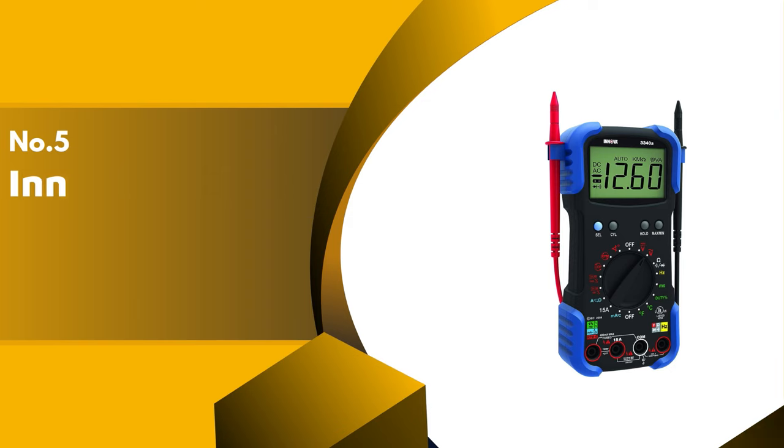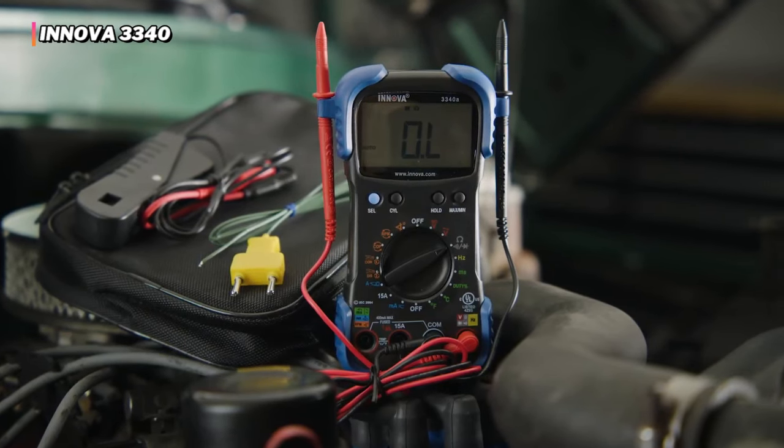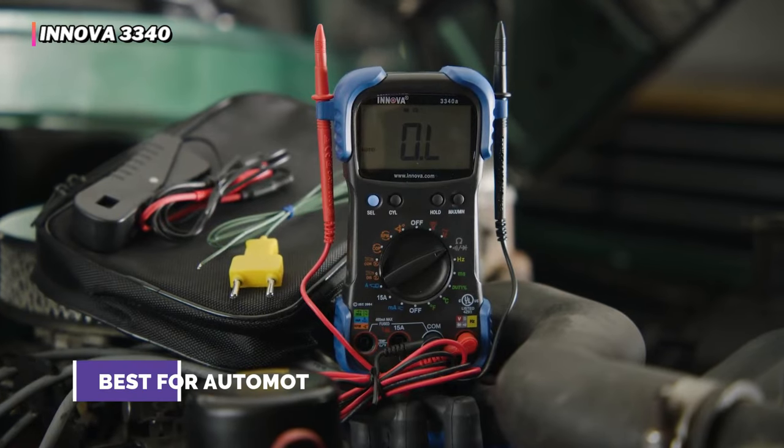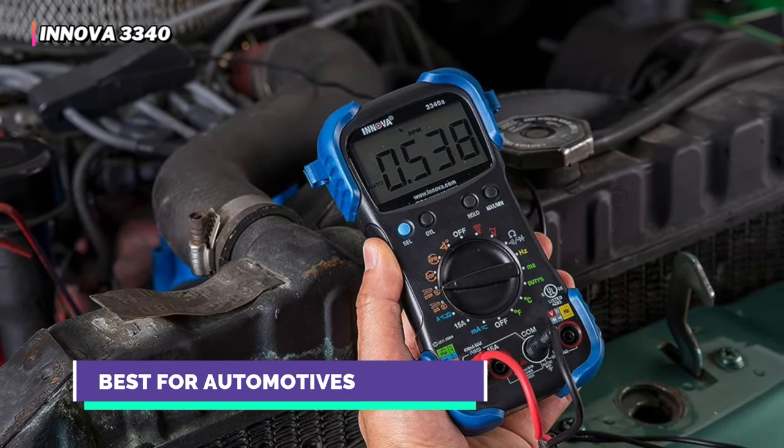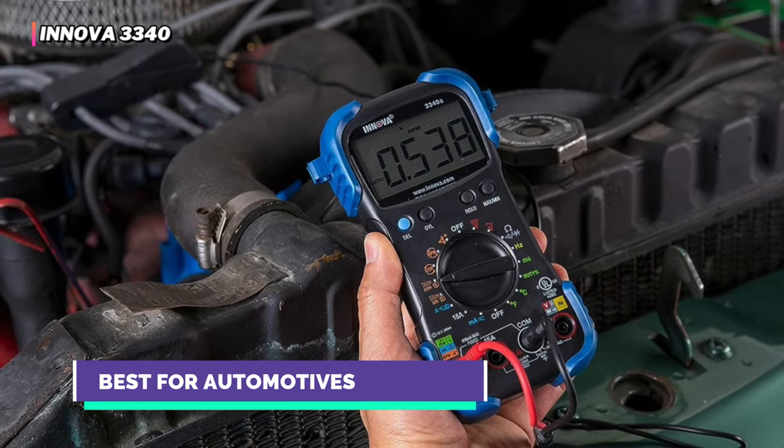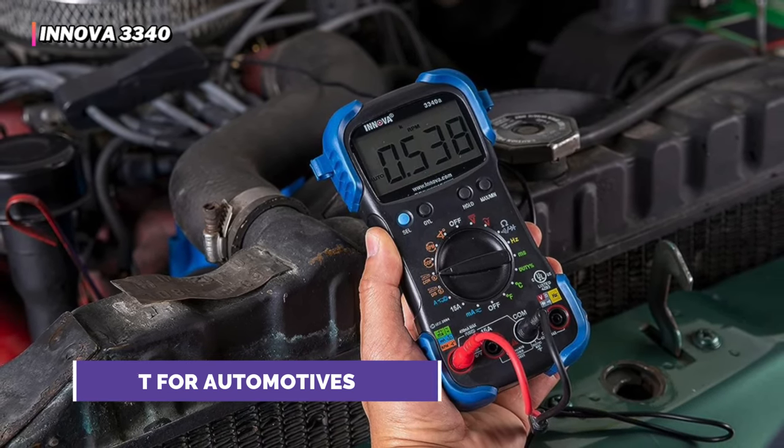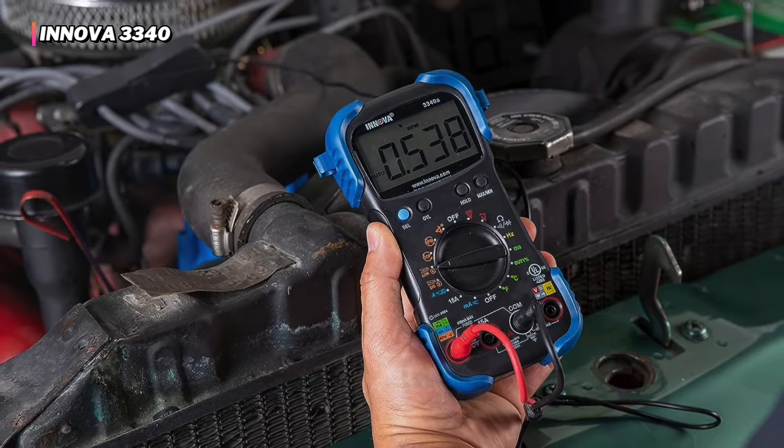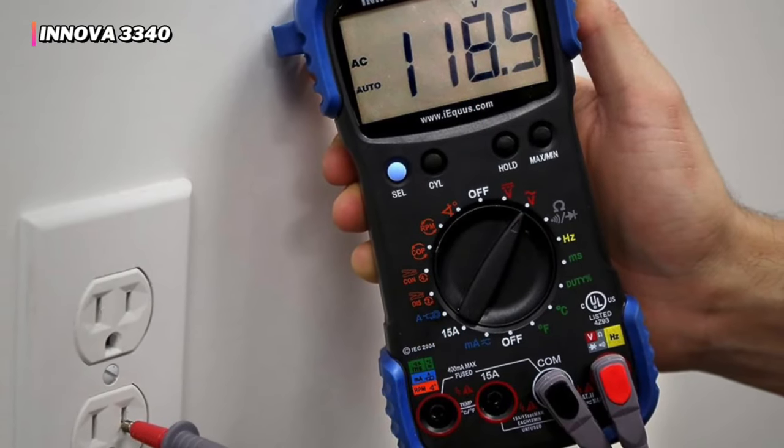The fifth product on our list is Innova 3340. You can certainly use this sturdy and accurate multimeter for testing electrical systems, appliances, and components in your home, but where it really shines is in the garage, as it's designed mostly for carrying out diagnostics and tests of automotive electronics.